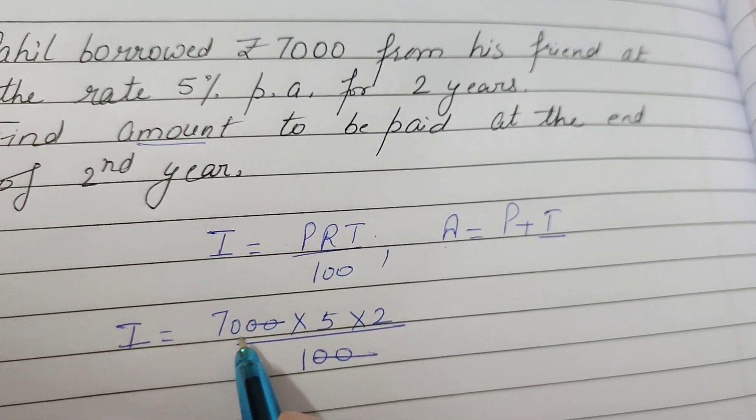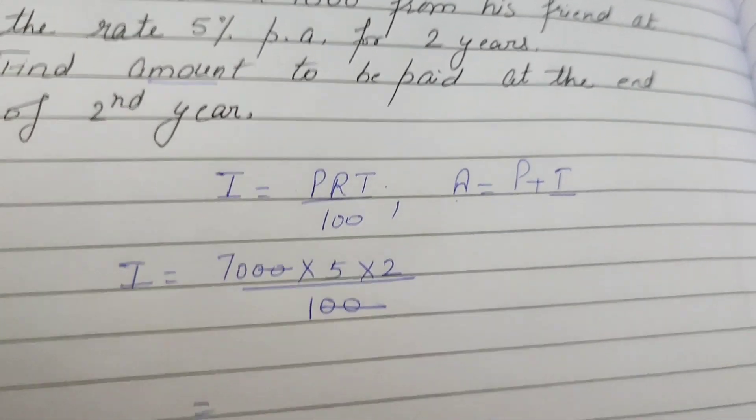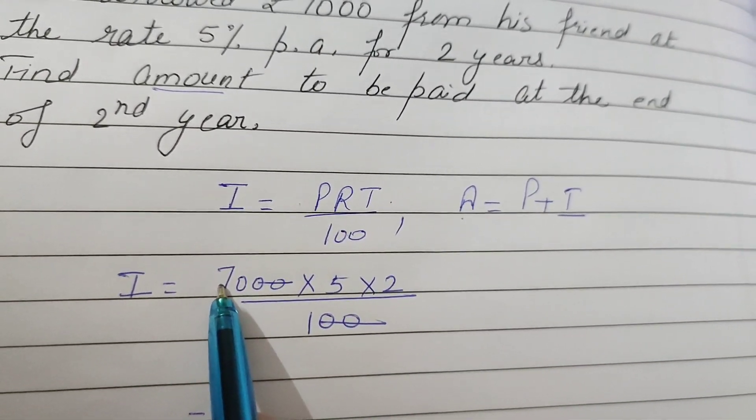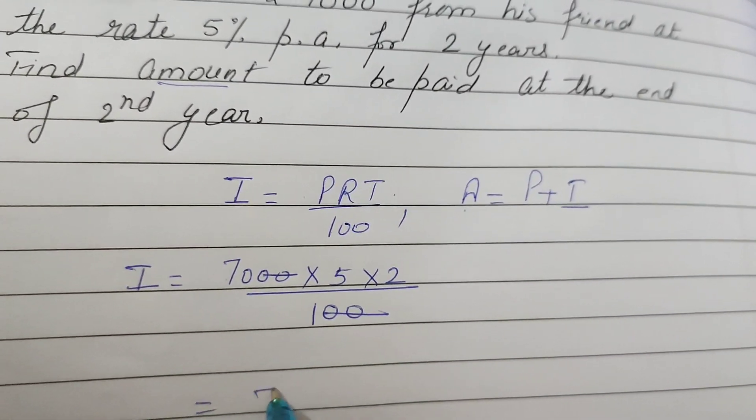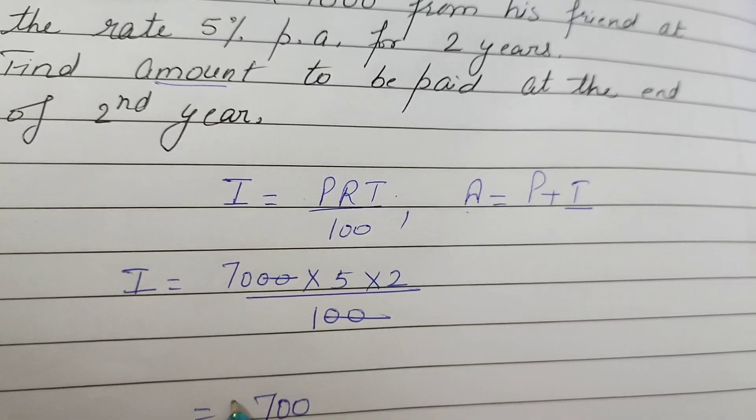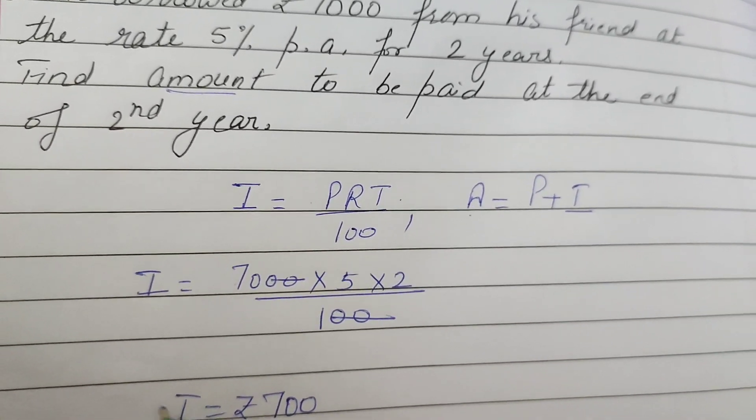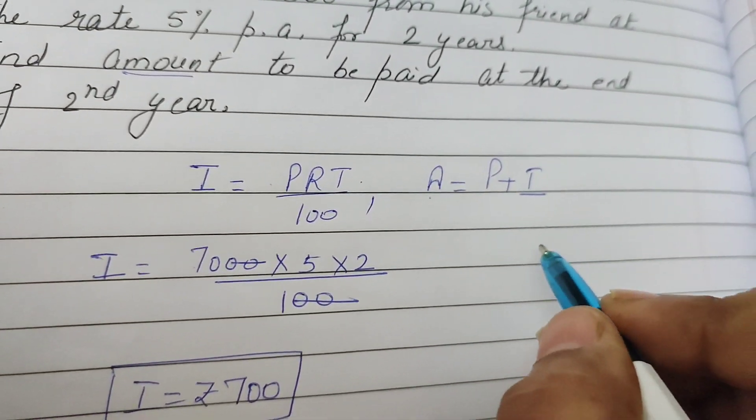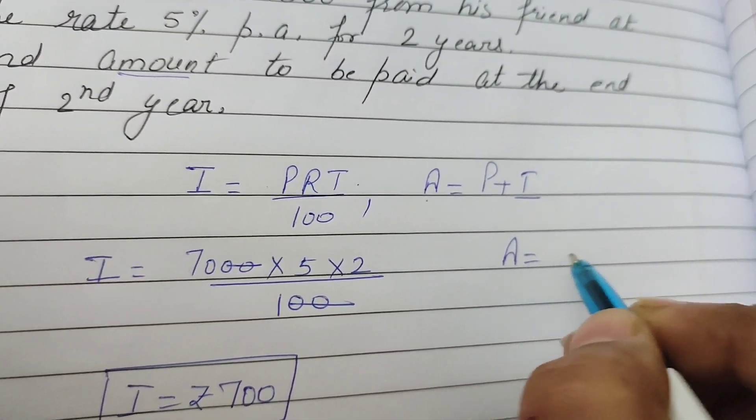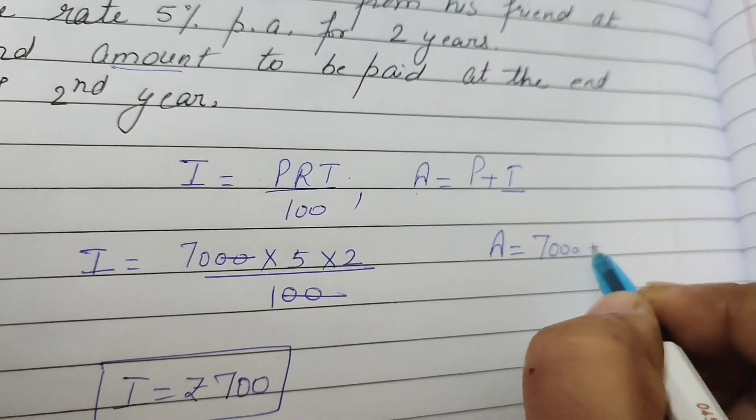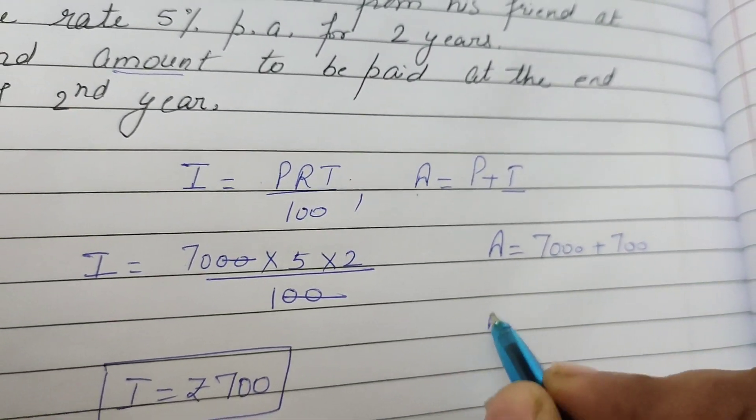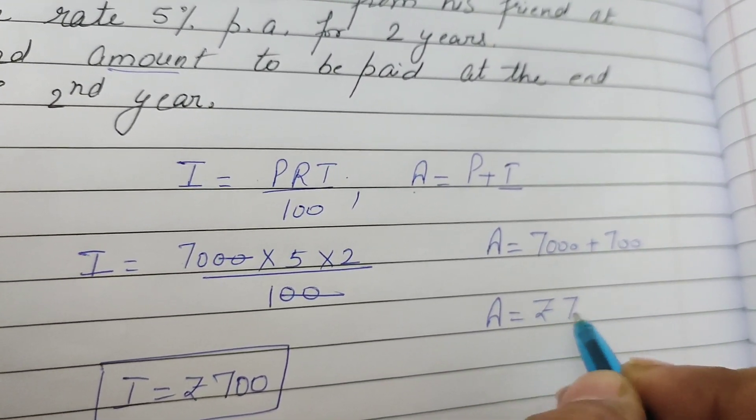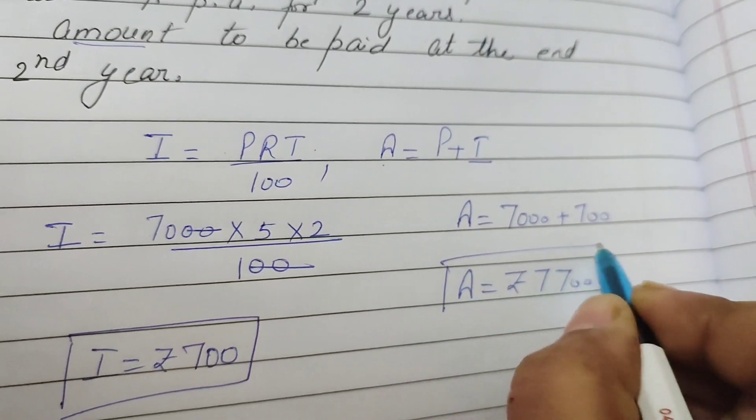Solve kar lehenge, multiply the numerator. 0 se 0 cancel. 5 twos are 10, 10 sevens are 70, and 7 mein 0 hogi, 700. So this will be your interest. Interest nikaal aya. Now we will find out the amount. Amount will be principal, that is 7000, plus 700. So amount will be 7700 rupees.